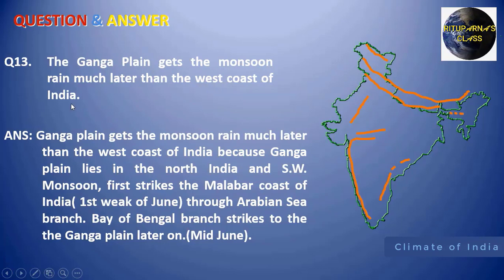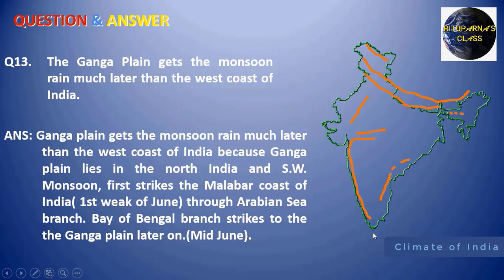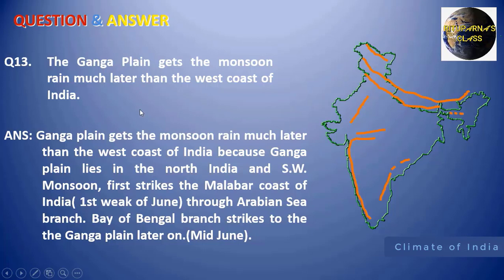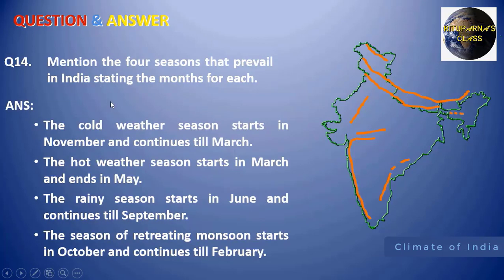Next: the Ganga plain gets the monsoon rain much later than the west coast of India. The Arabian Sea branch hits the Malabar Coast first, while the Ganga plain receives rainfall through the Bay of Bengal branch. If the Malabar Coast gets rainfall in the first week of June, the Ganga plain gets it around mid-June. Since the onset of the Bay of Bengal branch is later, the Ganga plain gets the monsoon rain much later than the west coast.